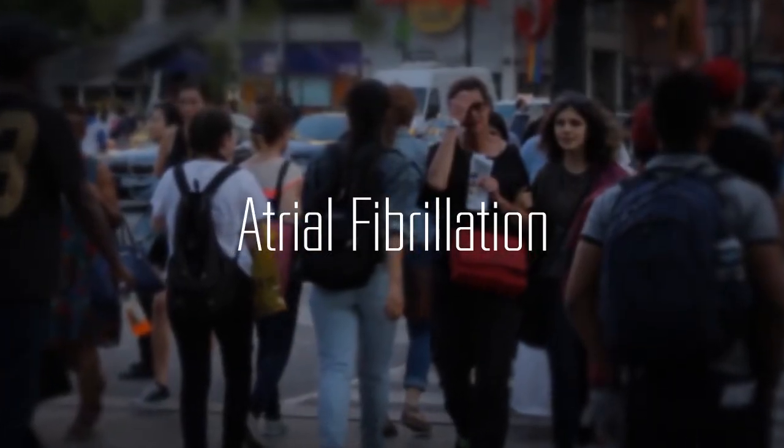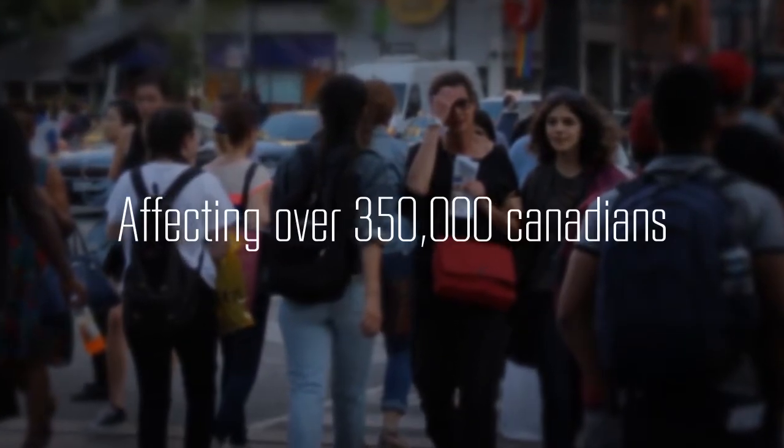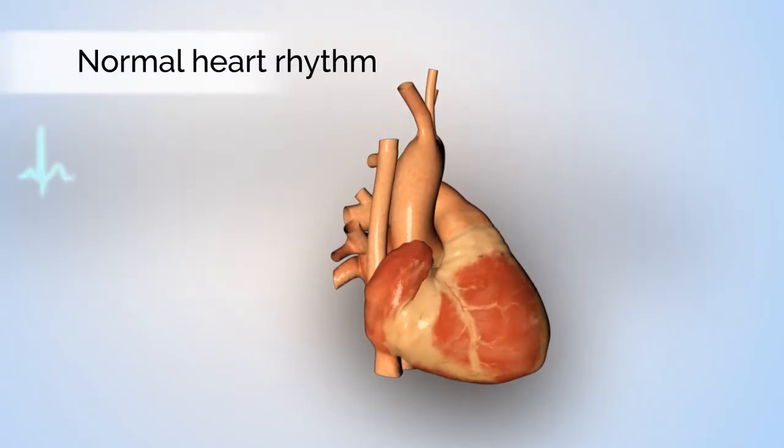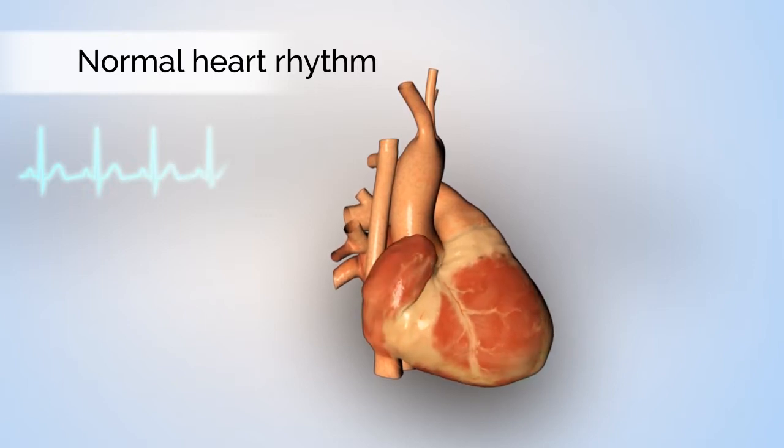Atrial fibrillation is a common condition affecting over 350,000 Canadians. It is a problem with the electrical system of the heart. The signal for the heart to beat is based on electrical activity.